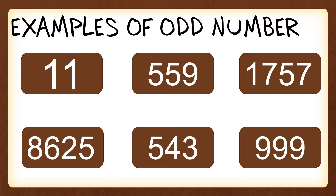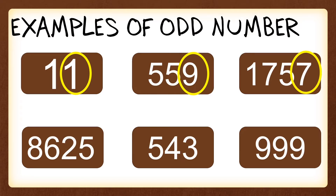Just like with even numbers, for odd numbers we're going to look at the last digit. In eleven, there is a one on the last digit. In five hundred fifty-nine, the last digit is nine. In one thousand seven hundred fifty-seven, there is a seven on the last digit. In eight thousand six hundred twenty-five, there is a five on the last digit. In five thousand five hundred forty-three, the number three is the last digit.